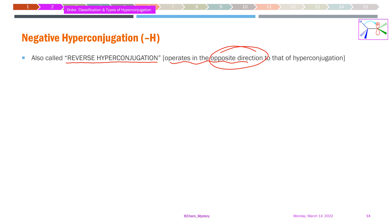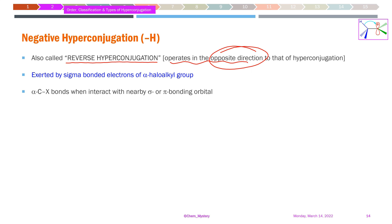In negative hyperconjugation, the sigma-bonded electrons of the alpha-haloalkyl group are the key participants. Just as alpha C–H bonds were involved in normal positive hyperconjugation, here the alpha C–halogen bond is involved in the same kind of delocalization interaction. This can occur near pi bonding molecular orbitals, near empty atomic orbitals, or even near non-bonding lone pair electrons.